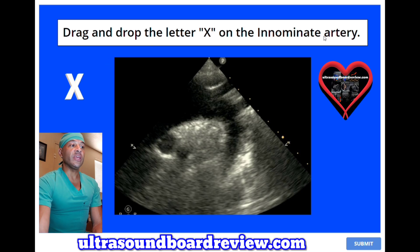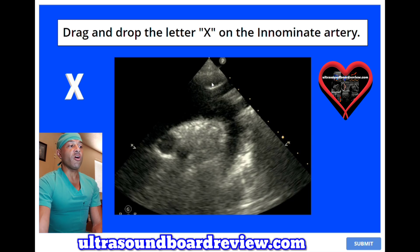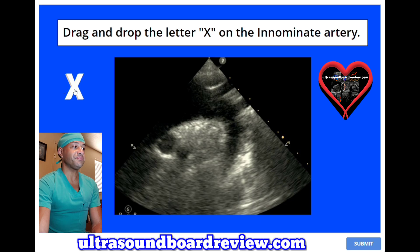Drag and drop the letter X on the innominate artery. This image is pretty tricky because the innominate artery, or the brachiocephalic artery, is right here. Then this is the left common carotid artery, and this is the left subclavian artery — this is just an artifact. The left subclavian artery doesn't start this low on the aortic arch.